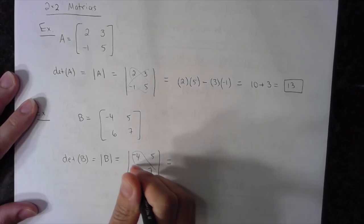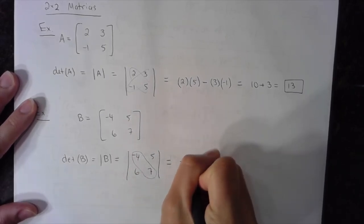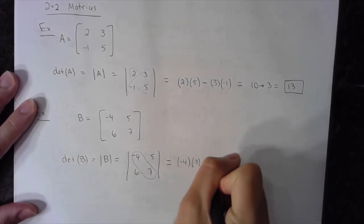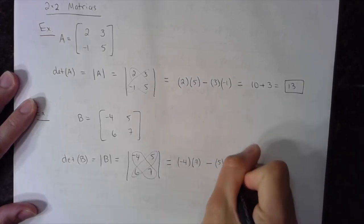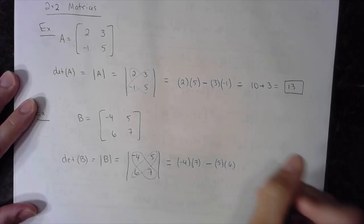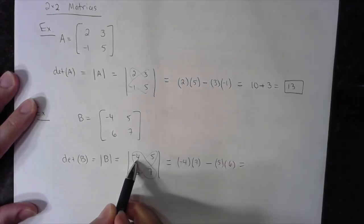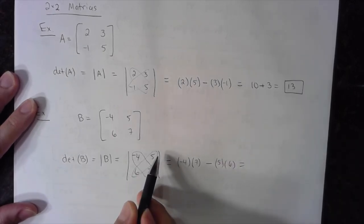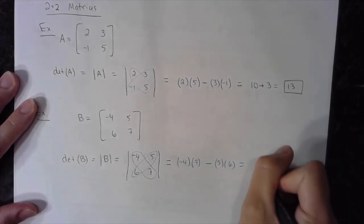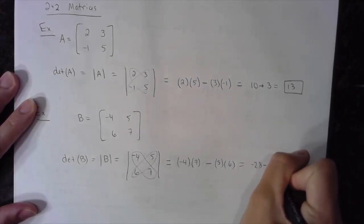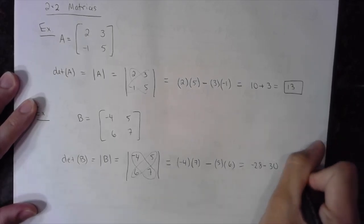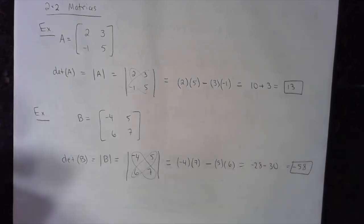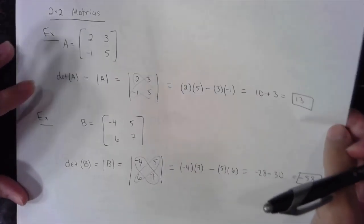Start with this diagonal, the product of negative four times seven, minus this diagonal, the product of five and six. Negative four times seven minus five times six. I get negative 28 minus 30 or negative 58. Again I get a scalar, simple number, as my determinant of the two by two matrix.